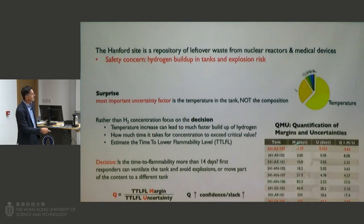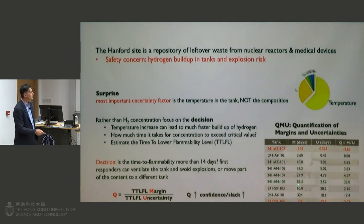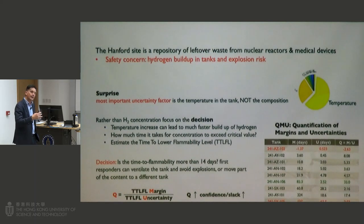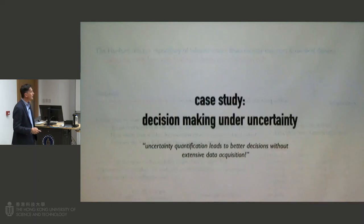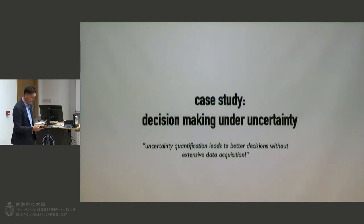If temperature reaches a certain limit, you can take remedial actions such as ventilating the tank or moving contents to a different tank. The study identified about a dozen high-risk tanks and tanks with very low risk that could serve as repositories for additional material. This shows that the idea is not necessarily to predict the system behavior with perfect accuracy, but quantifying the uncertainty leads to decisions that improve safety.